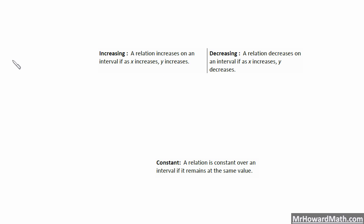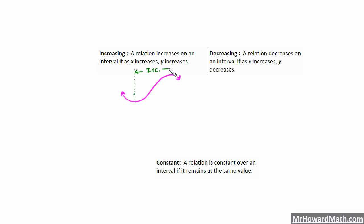If we look at a graph shaped like this and want to identify where it is increasing, notice here it's decreasing, then it changes direction and starts increasing. So from about right here to right here where it changes again — this interval would be considered increasing. Another way to say this is it's going up from left to right.